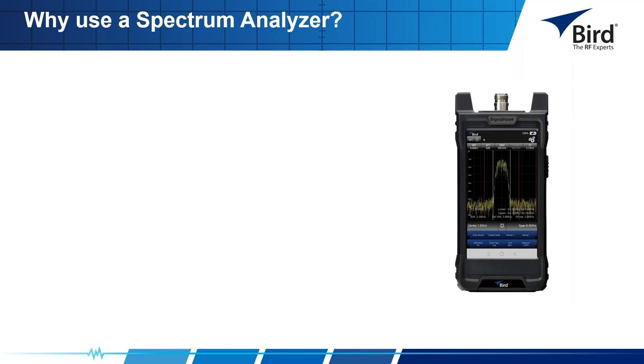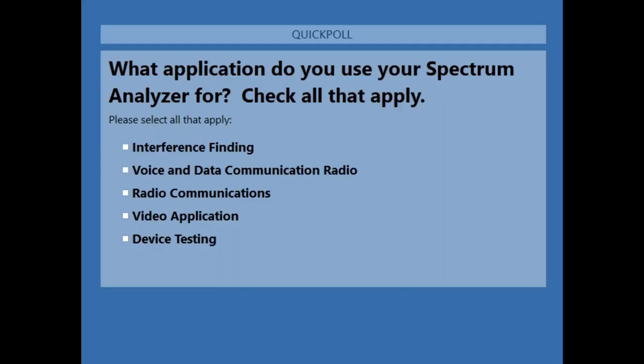Why use a spectrum analyzer? Before we continue, we opened the lines for a brief audience poll on what application you use your spectrum analyzer for. Continuing on — what can a spectrum analyzer do that no other piece of test equipment can do? They offer the ability to look at either a wide range of frequencies to find interfering signals, or a narrow range to look at out-of-band or in-band noise or interference.